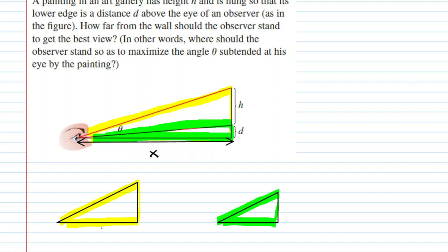For the first right triangle, the bottom leg is X, and the other leg is going to be H plus D. For the green triangle, we have the bottom leg X, and the other leg is D.